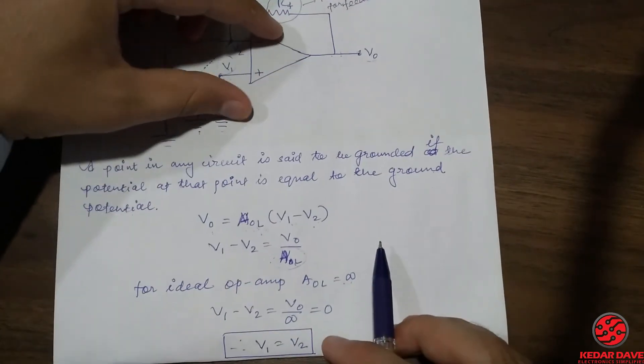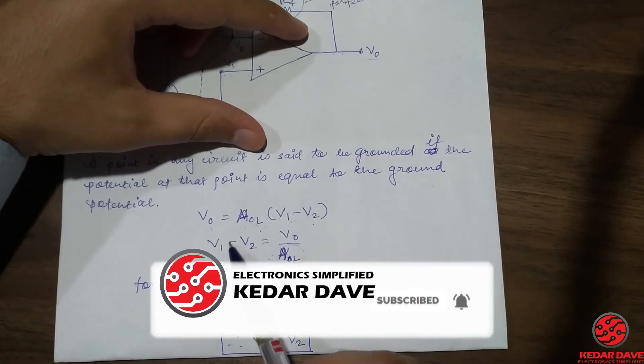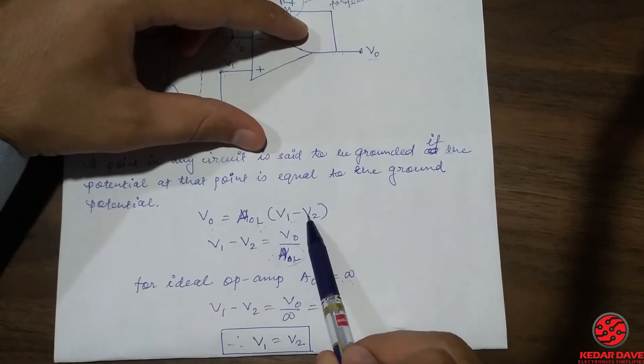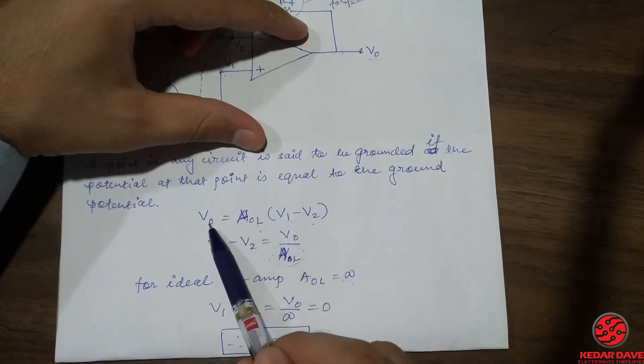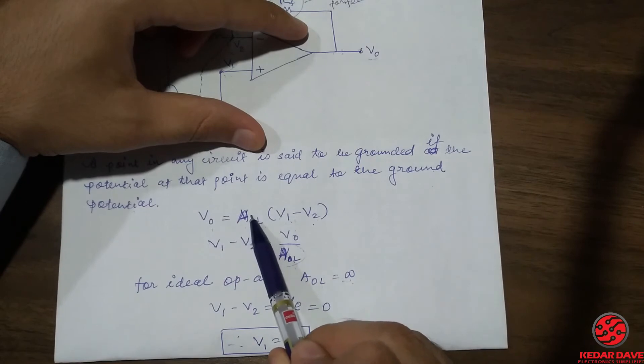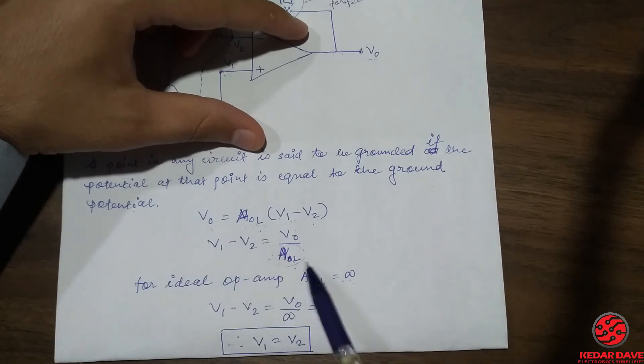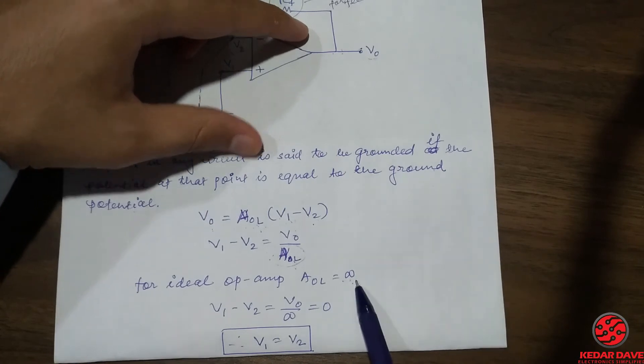If we put in this equation that AOL is equal to infinite, then what happens is here you can see V1 minus V2 equals to VO divided by AOL. The term open loop gain is moved to the other side of the equation, and you can see that for ideal operational amplifier open loop gain equals to infinite.